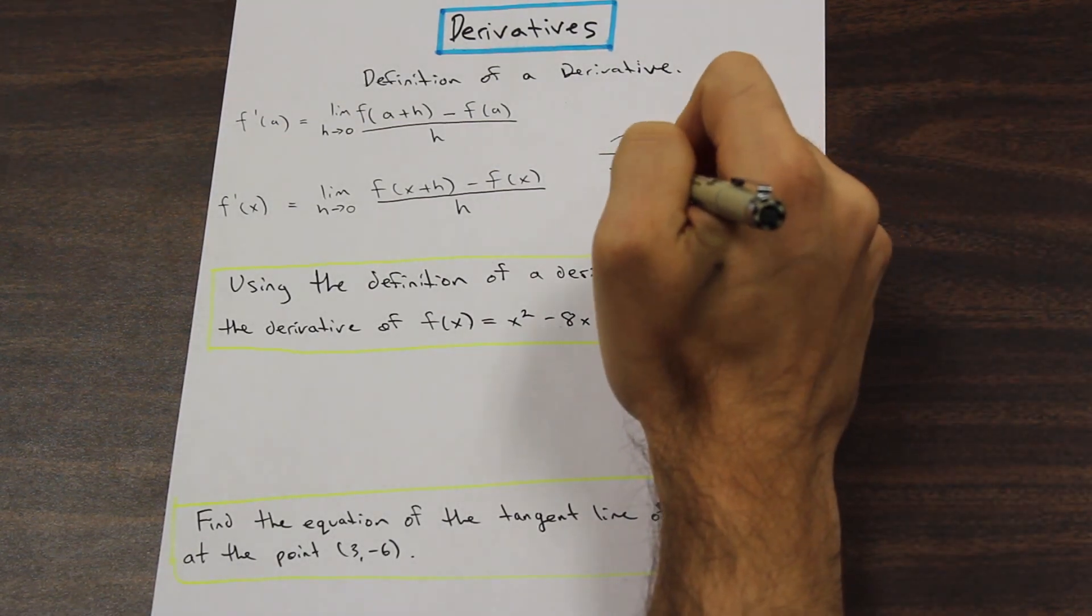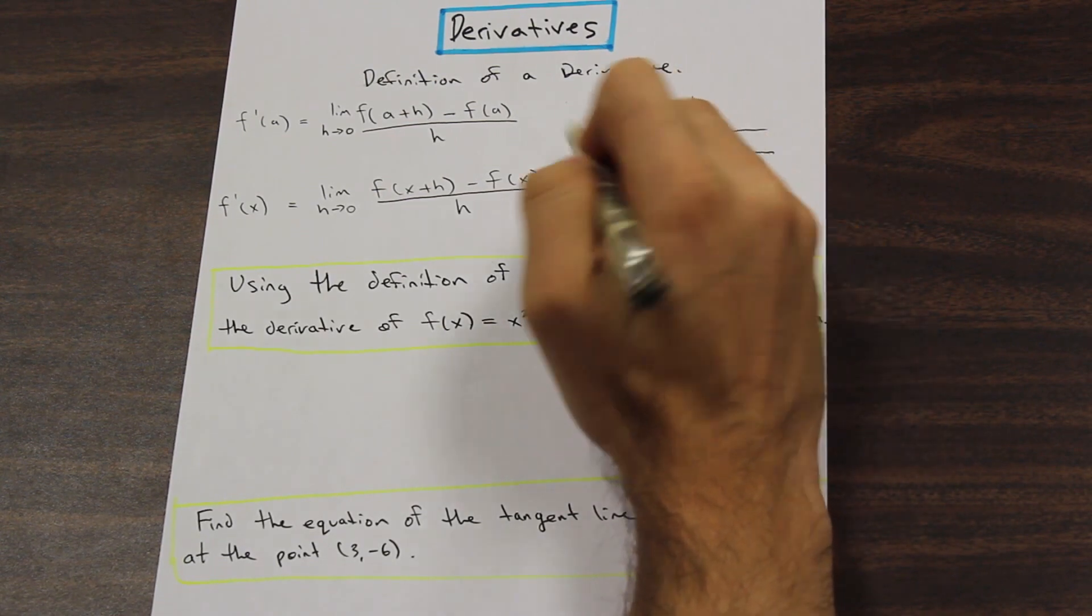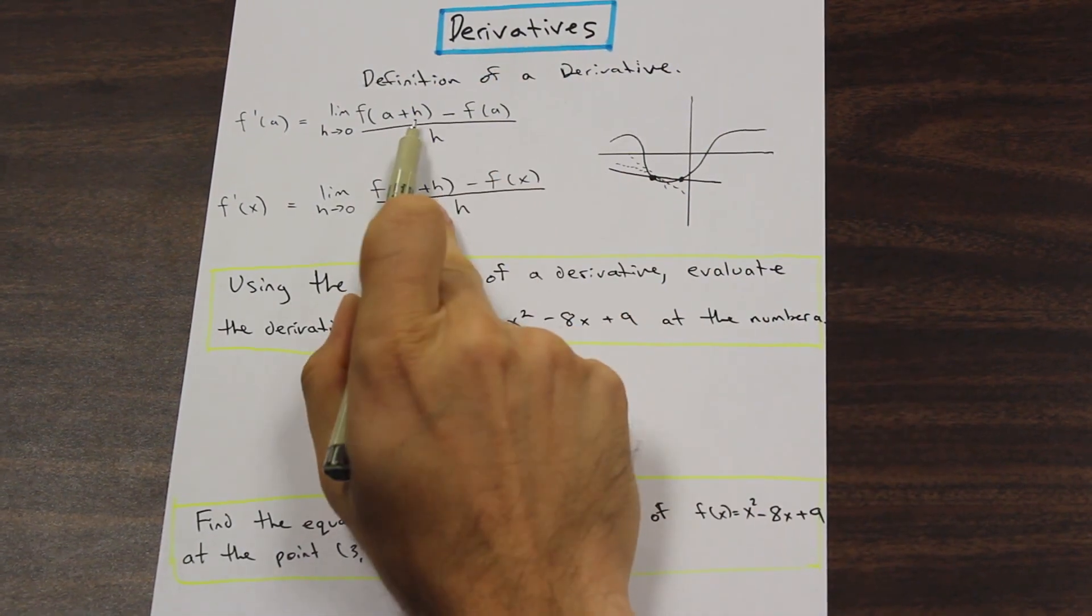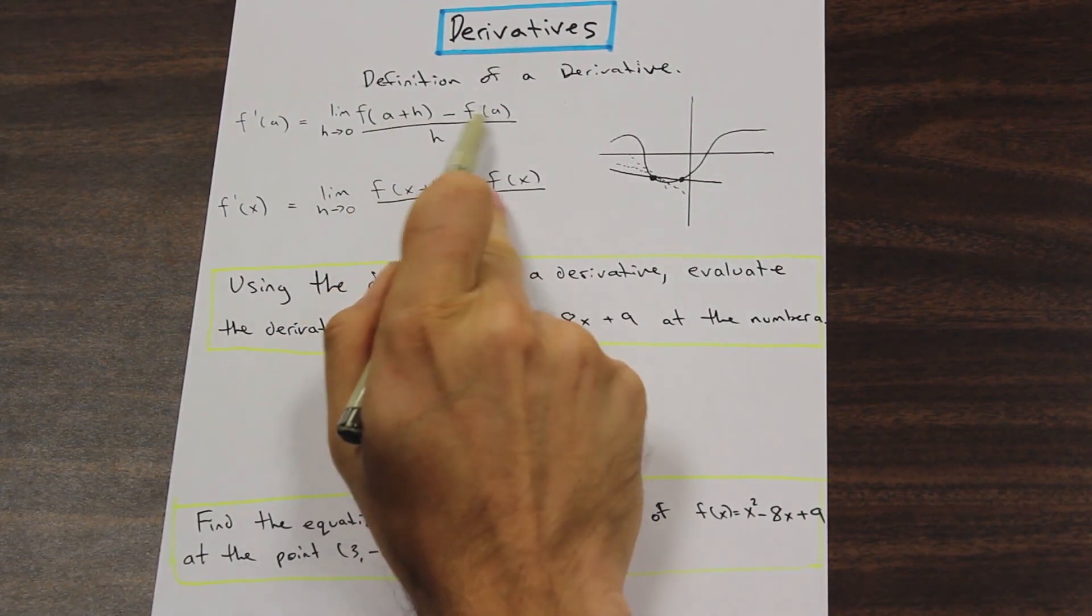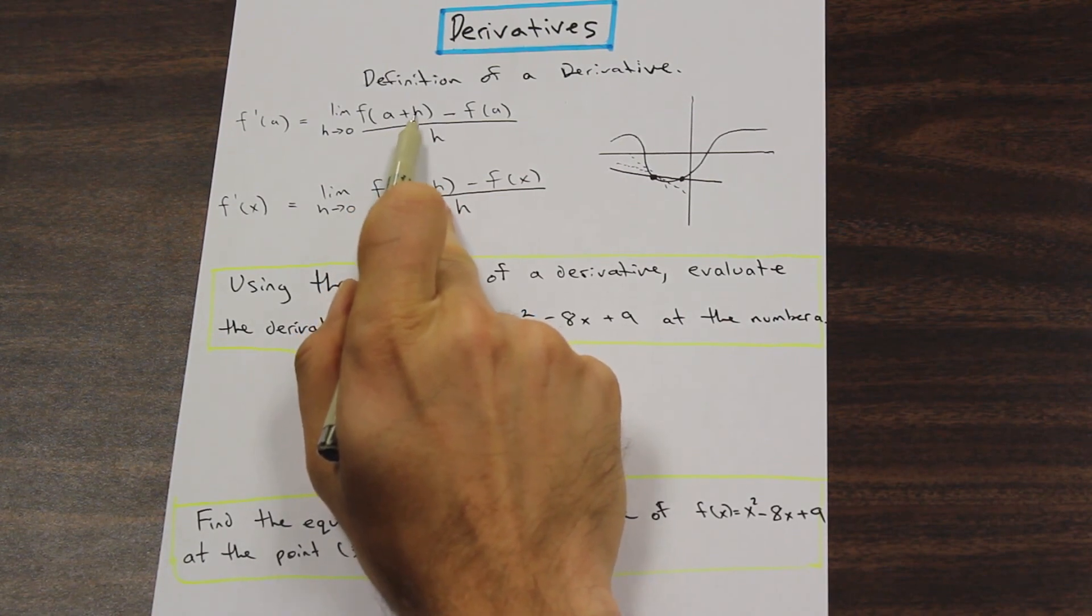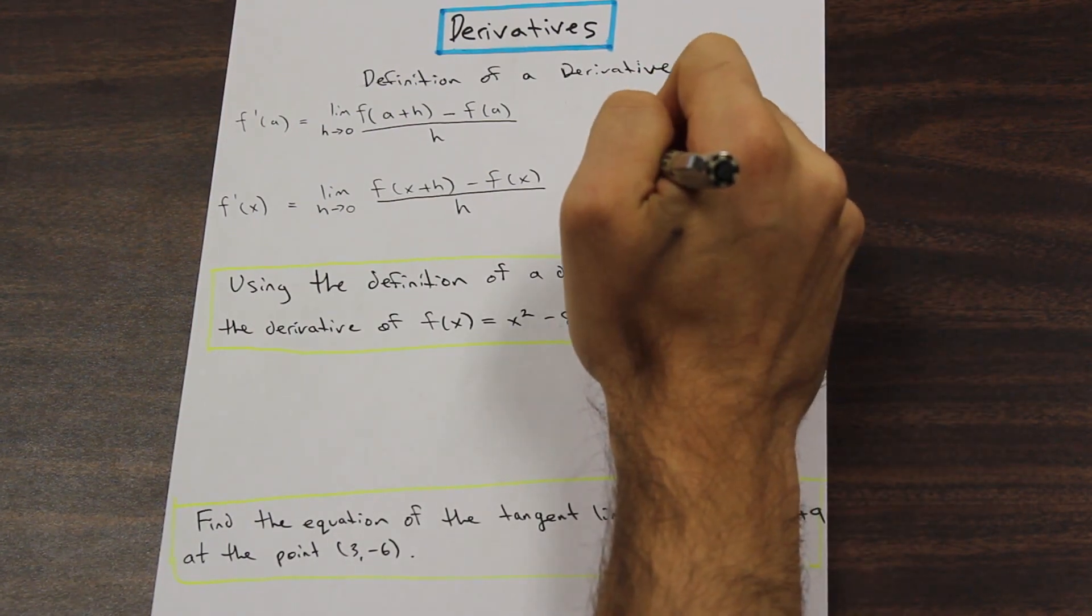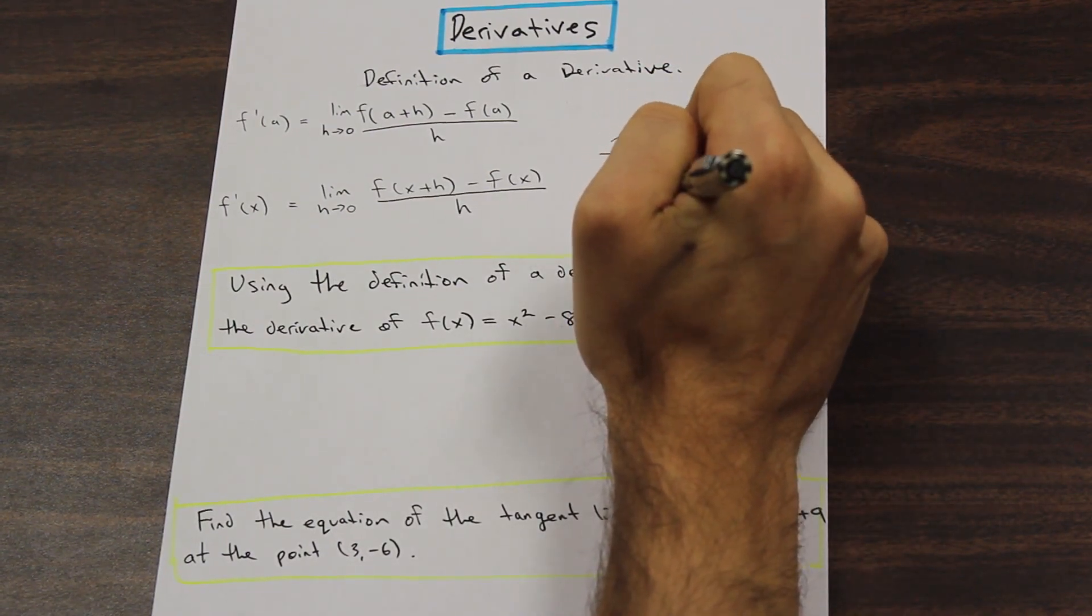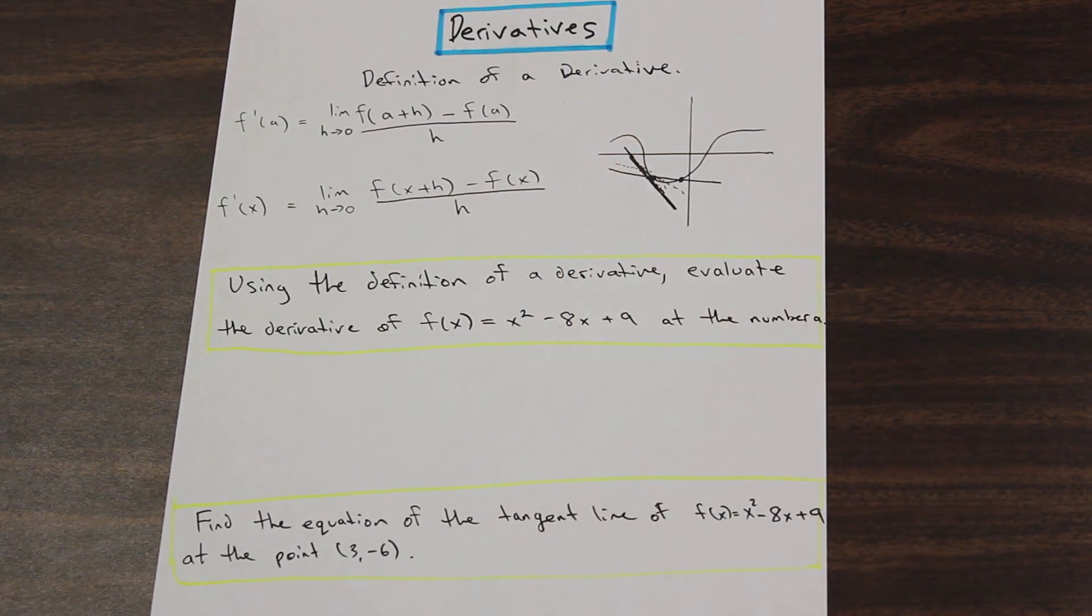As you get closer, what this kind of means is you're going to get closer and closer as h approaches zero. So the difference between the functions, because the only difference between these functions is this is a plus h. So there's an h added on here. So as h gets smaller and smaller, these two functions become the same, and this function eventually becomes the tangent. And that's exactly what we're looking for.